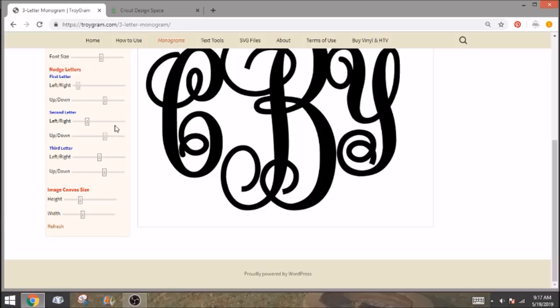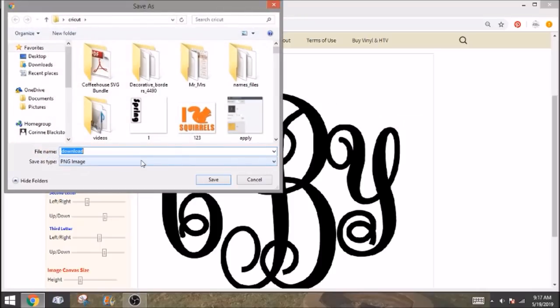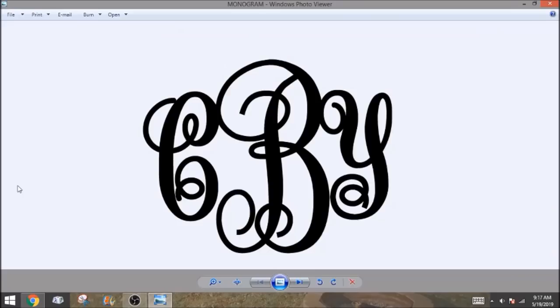You can kind of manipulate it however you want. And then you can change your canvas size, which just gives you a little bit more space. But we'll just do it this way. So then all you need to do is you just click save image as. It's going to save it as a PNG. So I'm just going to save it as monogram into my Cricut folder.